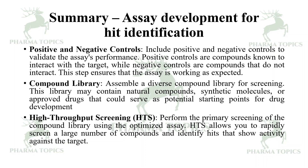For high throughput screening, perform a primary screening of the compound library using the optimized assay. High throughput screening allows you to rapidly screen a large number of compounds and identify hits that show activity against the specified target.